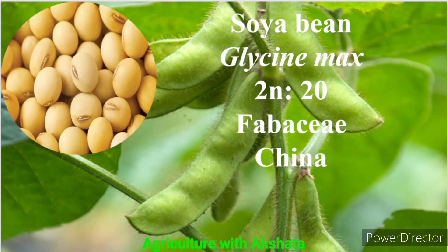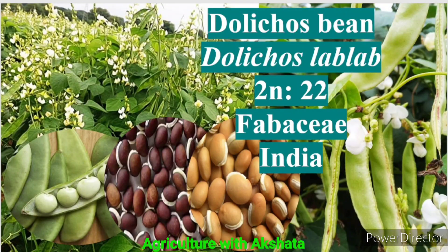Soybean: Glycine max, 2n = 20, Fabaceae family, origin China. Dolichos bean: Dolichos lablab, 2n = 22, Fabaceae family, origin India.